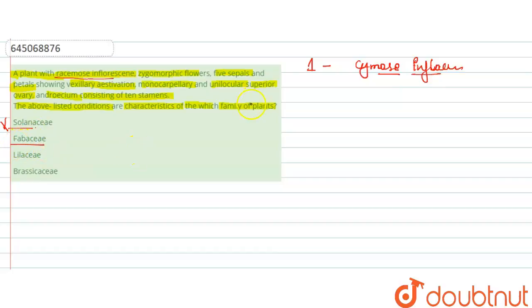Next is Fabaceae. We know that Fabaceae is the legume family, also called the legume family.